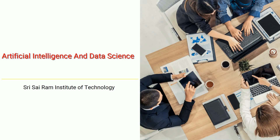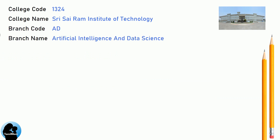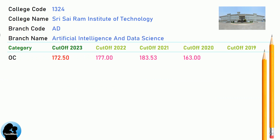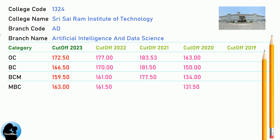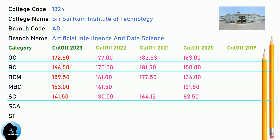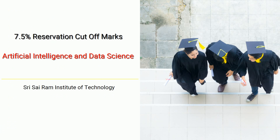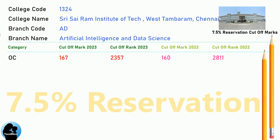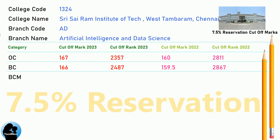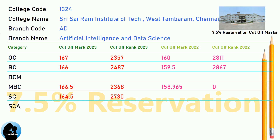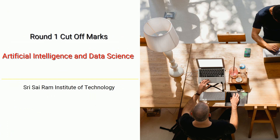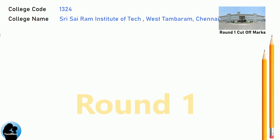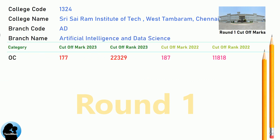DNA Cut-Off for Shri Sai Ram Institute of Technology in Artificial Intelligence and Data Science. DNA 7.5 Reservation Cut-Off for Shri Sai Ram Institute of Technology in Artificial Intelligence and Data Science. DNA Round 1 Cut-Off for Shri Sai Ram Institute of Technology in Artificial Intelligence and Data Science.